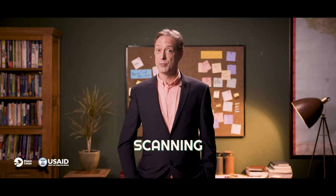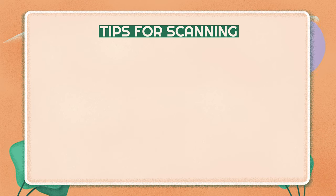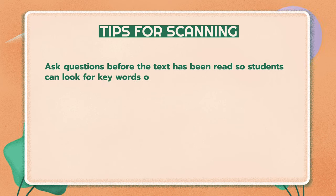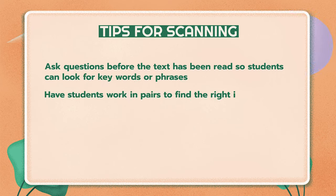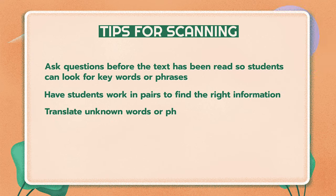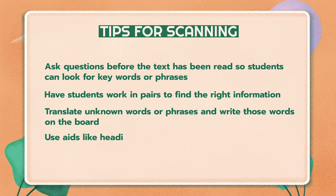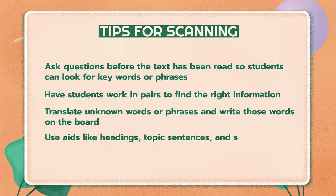Scanning helps students find specific information quickly in the text. If there are questions about the text at the beginning of the activity, then students can scan for key words or phrases that might answer those questions. Tips for scanning: ask questions before the text has been read so students can look for key words or phrases; have students work in pairs to find the right information; translate unknown words or phrases and write those words on the board; use aids like headings, topic sentences and subheadings.